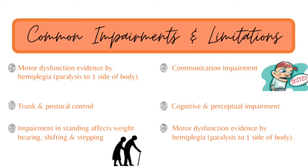With a stroke will come common impairments and limitations that your client may experience. The first one is motor dysfunction, described as hemiplegia — paralysis to one side of the body. If you have a left CVA, it produces a right hemiplegia. If you have a right CVA, it produces left hemiplegia. Whatever side of the brain is affected, it affects the opposite part of your body.